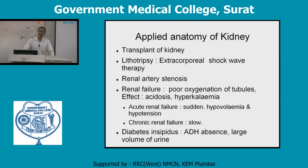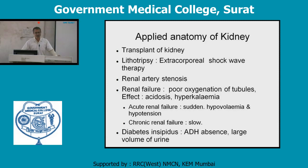Renal artery stenosis causes persistent hypertension. Treatment involves end-to-end anastomosis of the splenic artery with the renal artery to regulate normal blood flow to the kidney and thereby control hypertension.